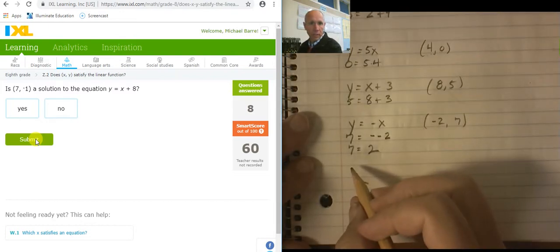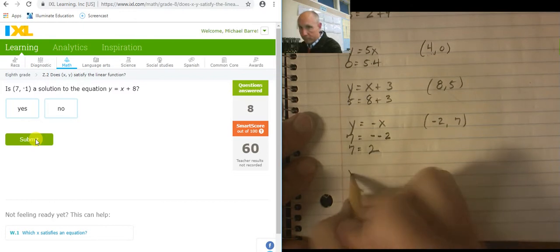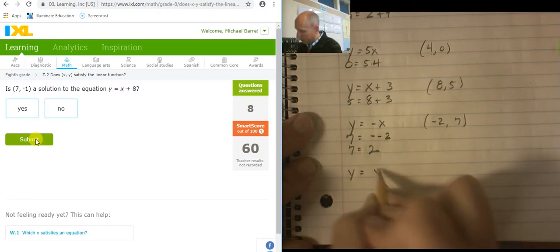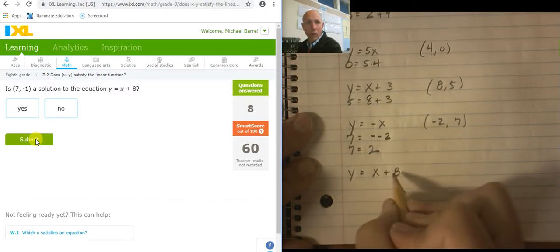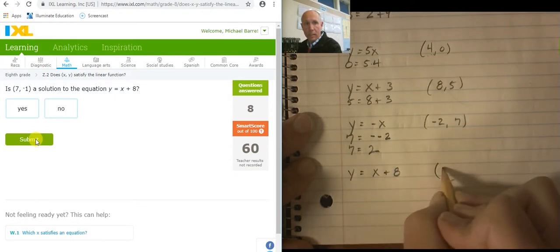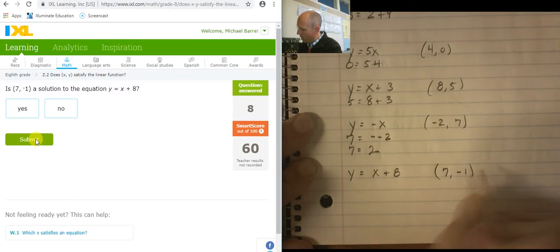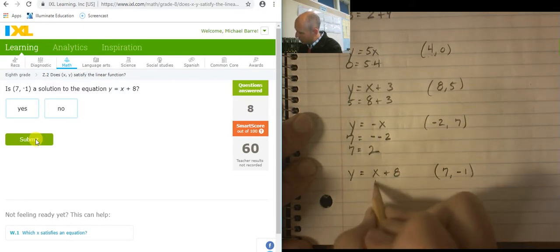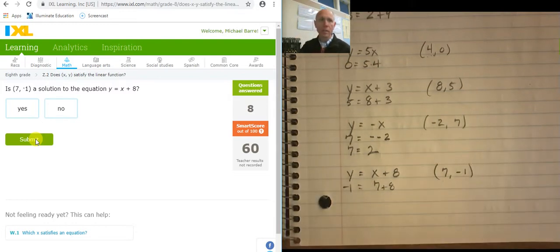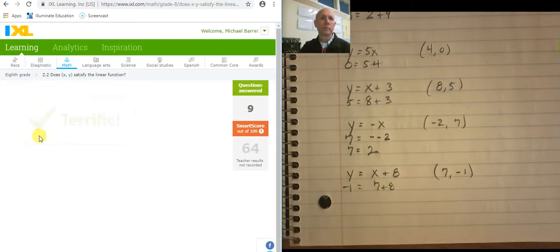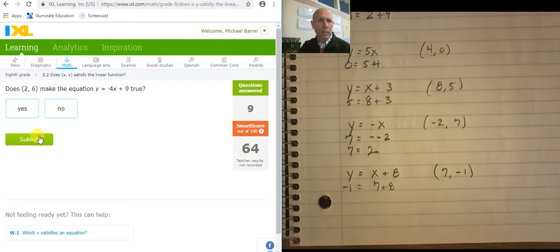And this will be my last one because I just got you guys up to a 60. Y equals x plus 8. And the point is 7, negative 1. Plugging in a 7 plus 8. Does that equal negative 1? Is 7 plus 8 negative 1? No. Okay. Now I'm just going to go faster. Let's see what happens here.